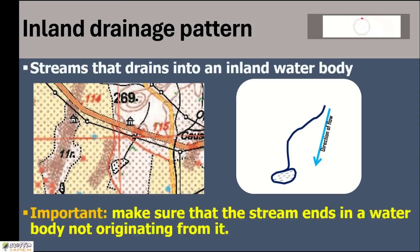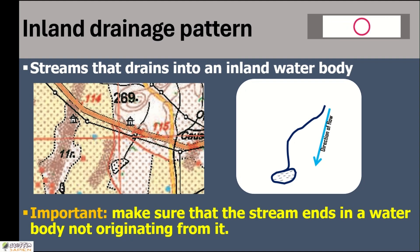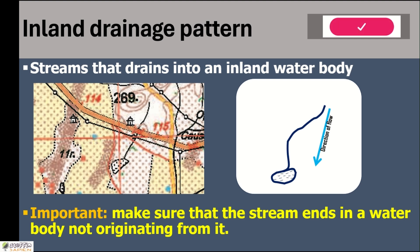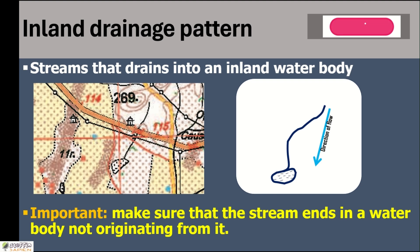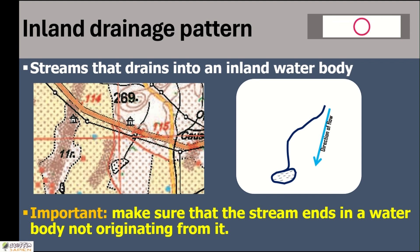There are a few more rivers with different characteristics — they originate from some inland water body, flow for a certain distance and sometimes disappear. They are disappearing streams, not inland drainage. We have to make sure the stream is flowing into the lake and ending there. If a stream is starting from a lake and flows a certain distance then disappears, that is a disappearing stream — we must ensure the stream is ending in the water body, not originating from it.